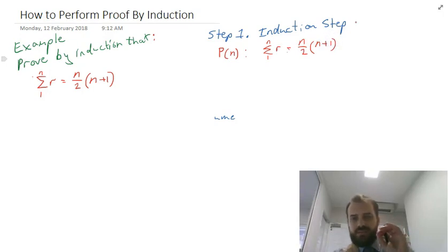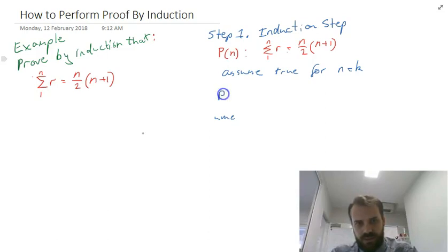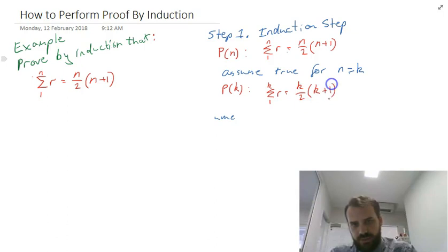Alright, so there's our statement of the proposition. Now from here we're going to assume that it's true for n equals k, just some random domino from our previous thing. So we're going to say it's true for k that from 1 to k if we add all the natural numbers we get k over 2 times k plus 1.